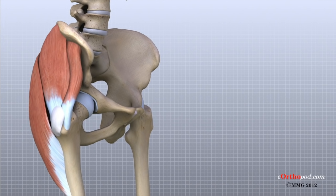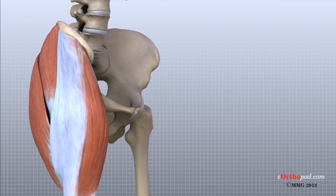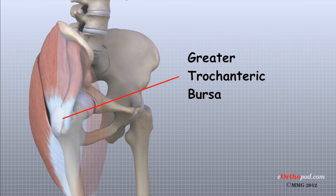A bursa that sometimes causes problems in the hip is sandwiched between the bump on the outer hip, the greater trochanter, and the muscles and tendons that cross over the bump. This bursa, called the greater trochanteric bursa, can become irritated and inflamed, causing a condition called trochanteric bursitis.